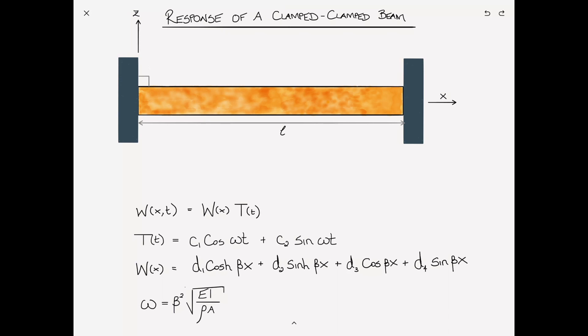So the boundary conditions in the case of a clamp-clamp beam are obviously the same on both ends and that is that both the displacement and the slope of the beam is zero. So W(0) = 0 and also W,x(0) = 0. And then at x = L we have the exact same boundary conditions. W(L) = 0 and W,x(L) = 0.